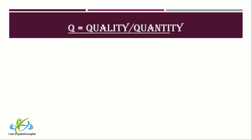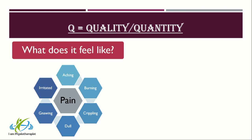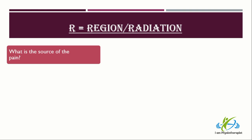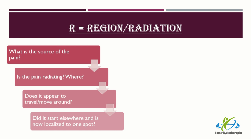Q stands for Quality — what does the pain feel like? Use words to describe it such as aching, burning, crippling, dull, gnawing, irritated, sharp, stabbing, tender, crushing, throbbing, nauseating, shooting, twisting, or stretching. R stands for Region — what is the source of the pain? Is the pain radiating?